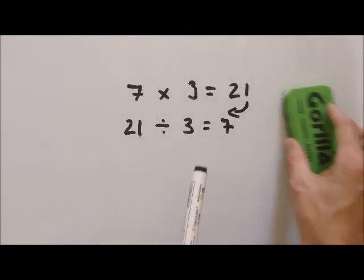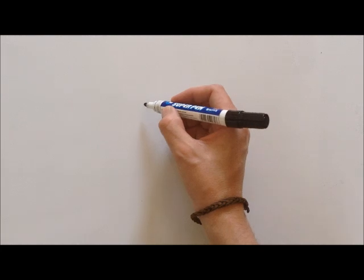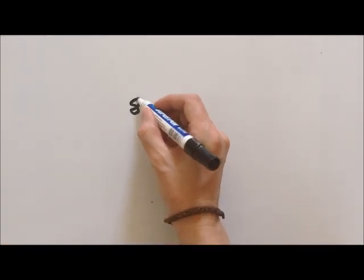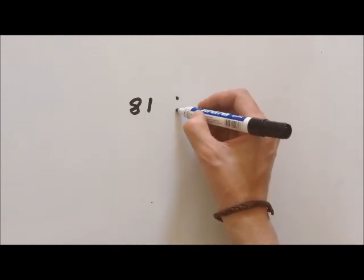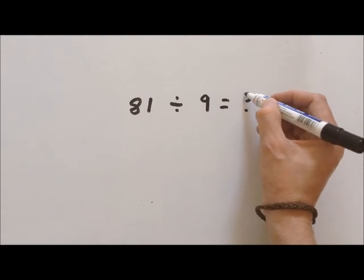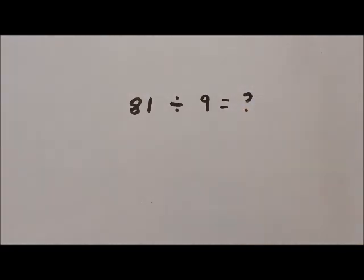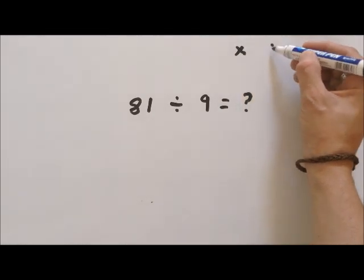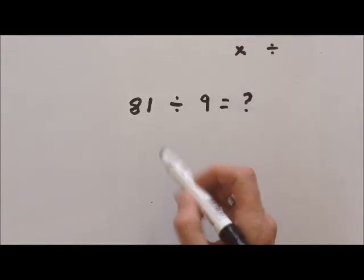So let's see if we put one down. Let's say 81 divided by nine equals question mark. Now if we look at it—I'll put once again multiplication is the inverse of division—if we look at it from a reverse perspective...